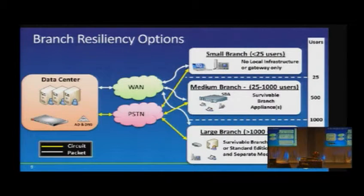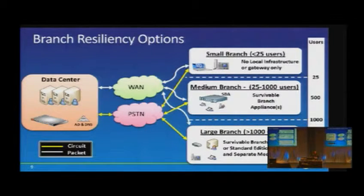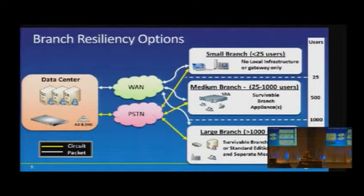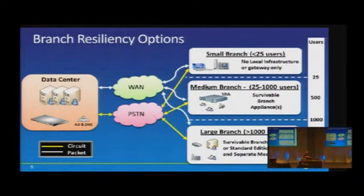Let's talk about branch office resiliency — an area where there was no solution in 2007 R1 or R2. We break branch offices into categories based on whether they have a technically qualified on-site resource. For very small branches, there may be no local infrastructure — those users connect back to a pool at the central site, or there may be a PSTN gateway for telephone calls. For medium branches, up to approximately 1,000 users, we can implement a survivable branch appliance.